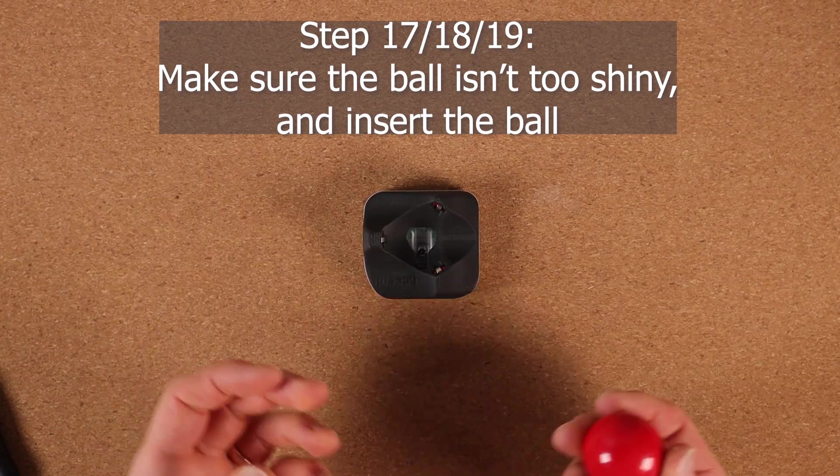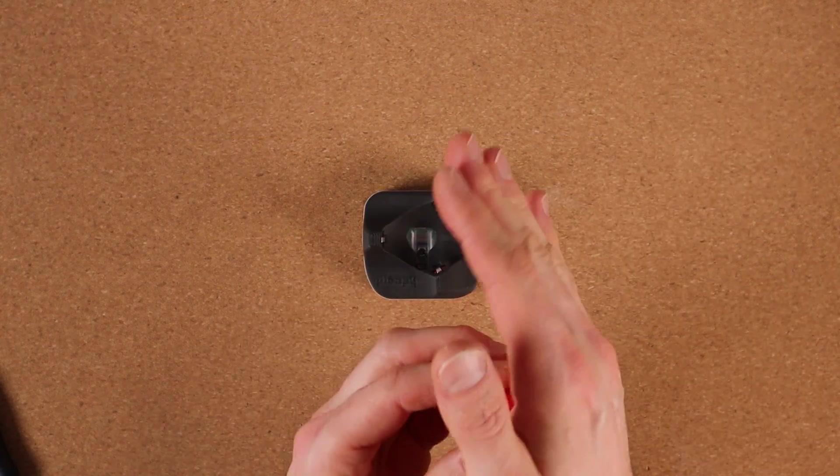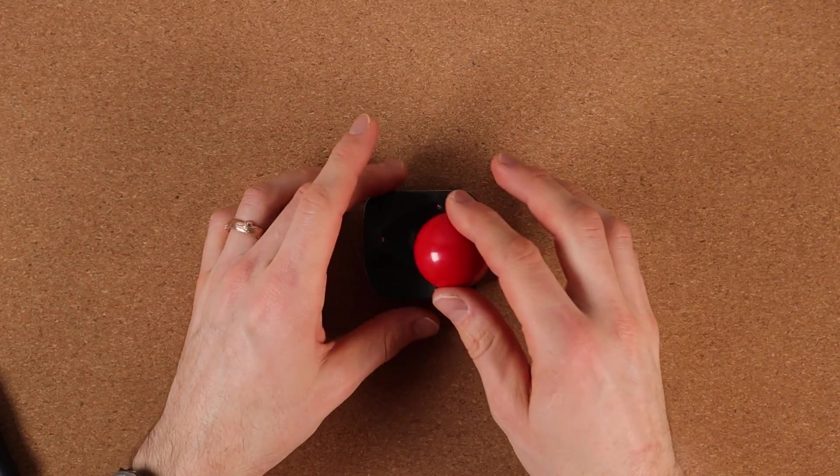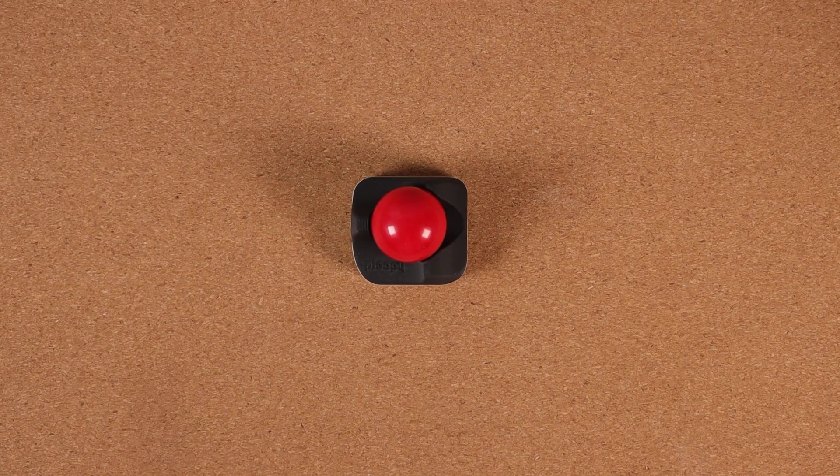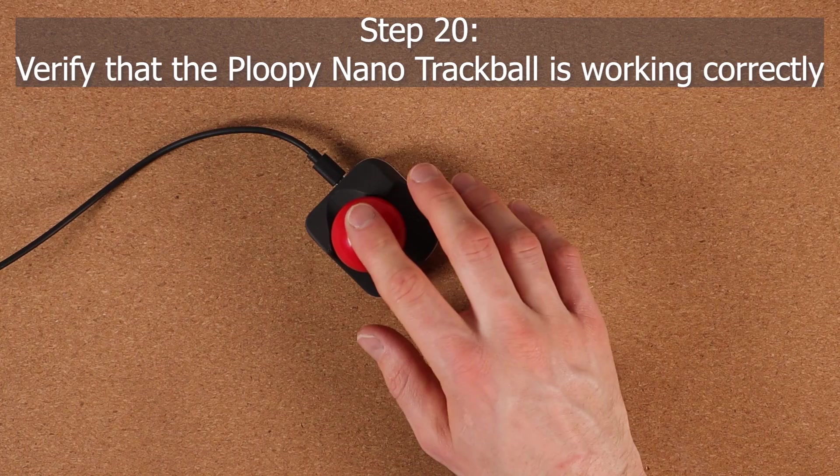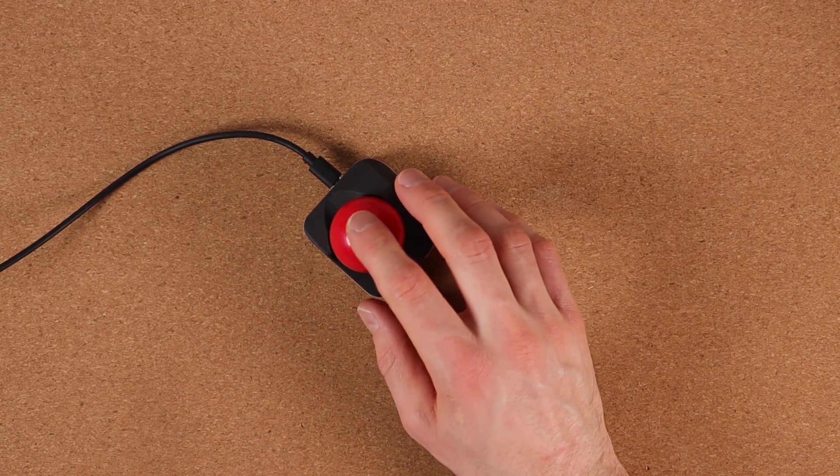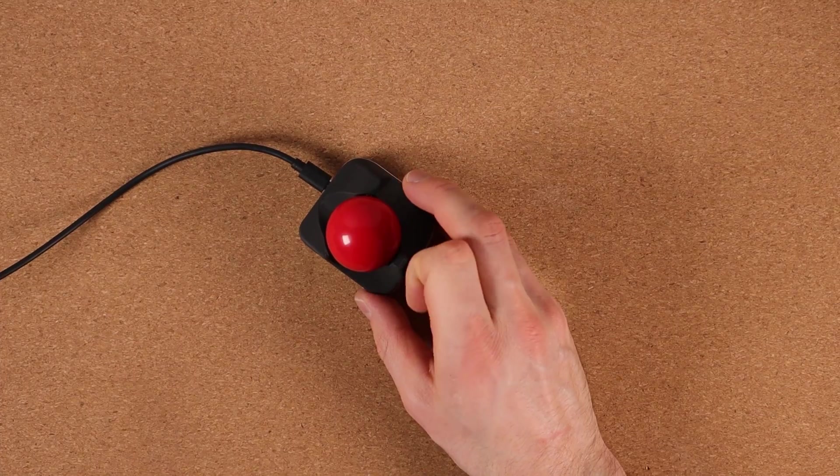So next step is to insert the ball. Well, verify the ball is not too shiny. Rub it in my hands. It's not very shiny. Seems like it's rolling fine. Now it's time to plug it in. The ball seems to be tracking perfectly fine. Seeing it on my computer screen, everything's working as intended.